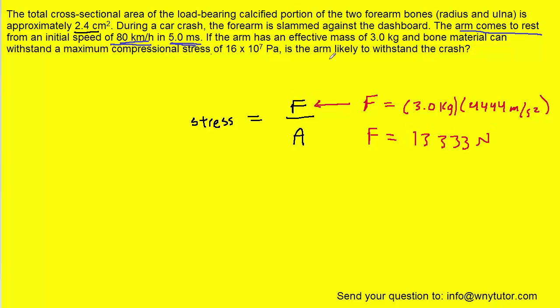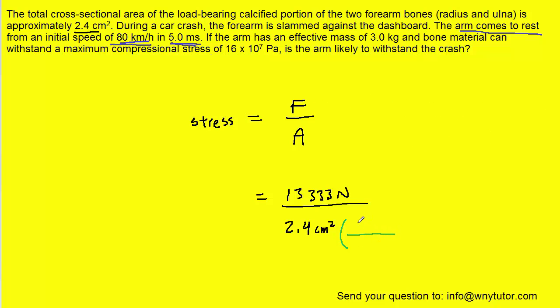So now that we have the force acting on the arm, we can take that force and divide it by the cross-sectional area, which was given to us. Notice it's given in centimeters squared. We're going to have to make a conversion into meters squared. And to make that conversion from centimeters squared to meters squared, we just recall that one meter is exactly 100 centimeters.